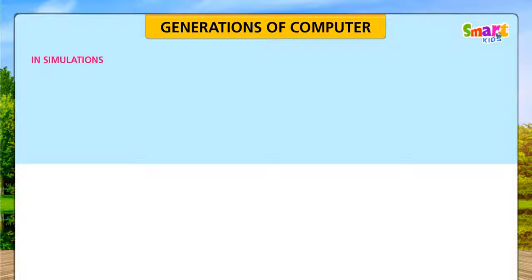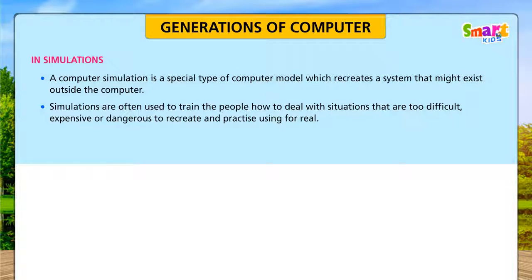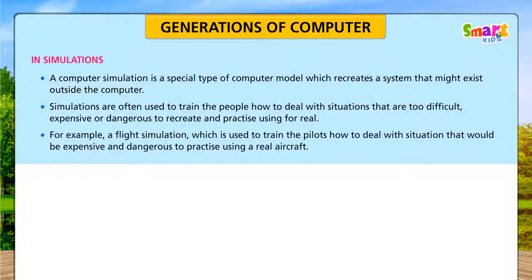In Simulations: A computer simulation is a special type of computer model which recreates a system that might exist outside the computer. Simulations are often used to train people how to deal with situations that are too difficult, expensive, or dangerous to recreate and practice using for real. For example, a flight simulation is used to train pilots how to deal with situations that would be expensive and dangerous to practice using a real aircraft.